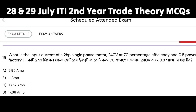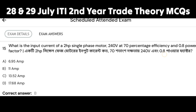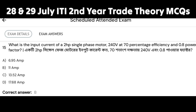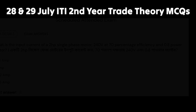What is the input current of a 2HP single-phase motor at 240V with 100% efficiency and 0.8 power factor? The 2HP single-phase motor input current calculation uses 0.8 power factor.